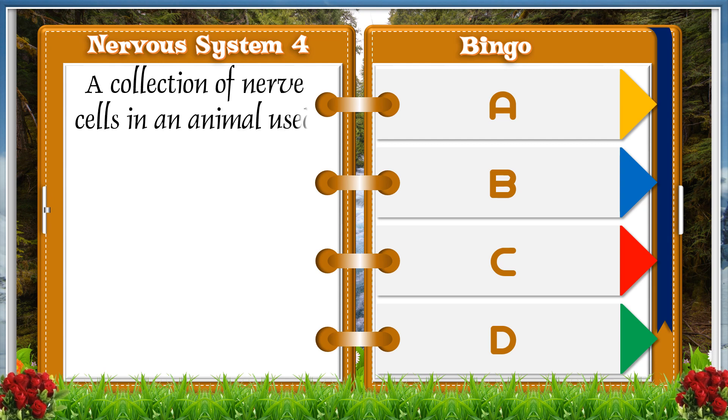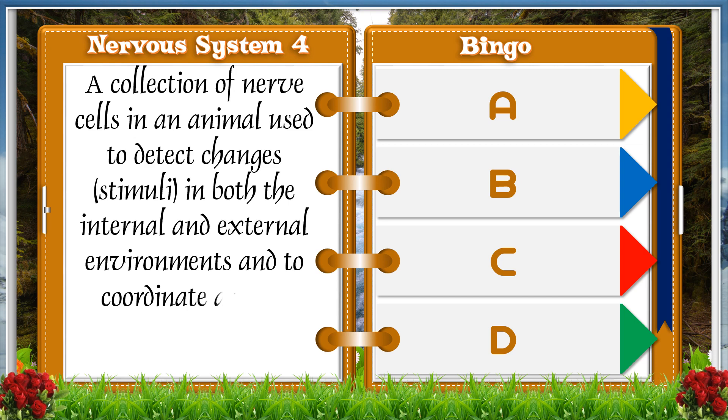A collection of nerve cells in an animal used to detect changes or stimulus in both internal and external environments and coordinate a rapid response to the stimuli.